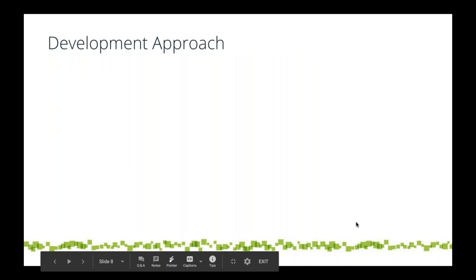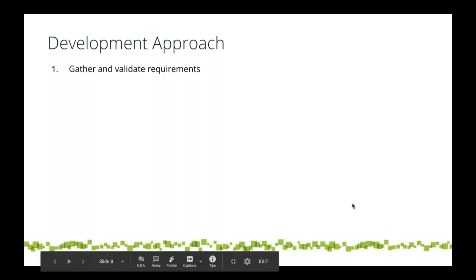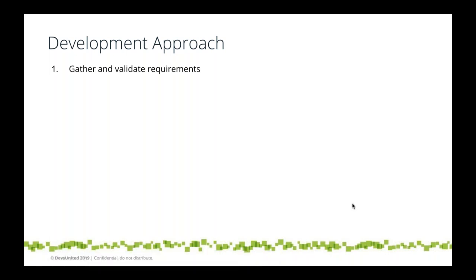Let's talk about development approach. When you start developing with AMPscript, you have to think about your strategy, especially for people just getting started. The first step is gathering and validating requirements — meet with your marketing team, document those requirements, and get sign-off. It's like architecture: you're not going to build a house until you have a blueprint approved by your client.